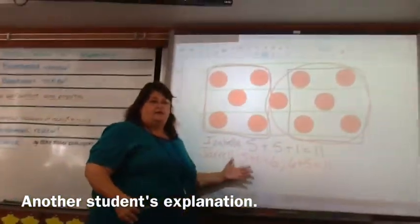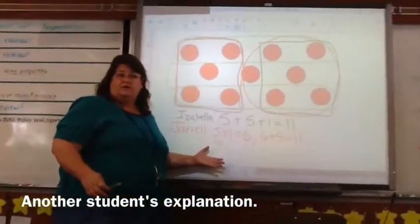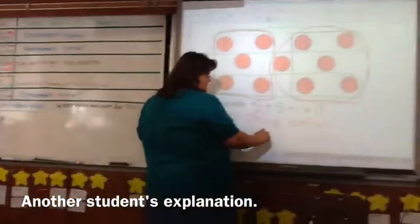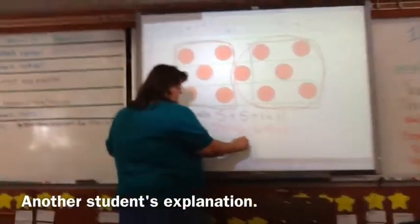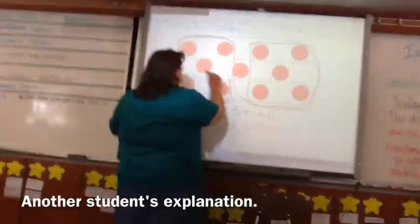Okay. And how did you think in your mind? 4 plus 4 or? 4 plus 4. 4 plus 4. Okay. What was that? 8, and then I added the extra 3. And then you saw it with 3 in the middle. Okay.